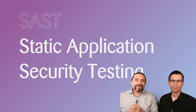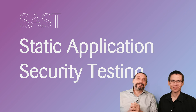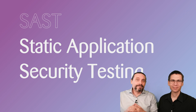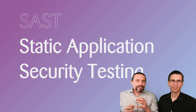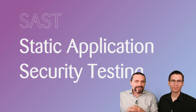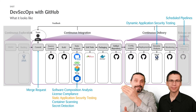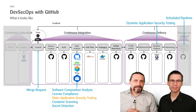Hi and welcome everyone to our fifth session, where we are going to look at our DevSecOps pipeline, which we are building with GitHub. And in this video, we will have a look at SAST, at static application security testing. This is our DevSecOps pipeline which we are building with GitHub.